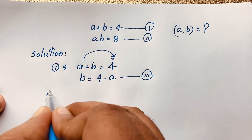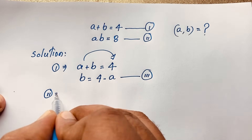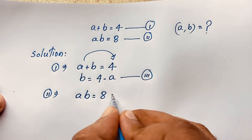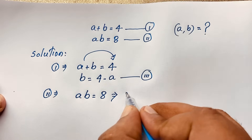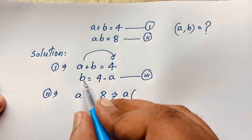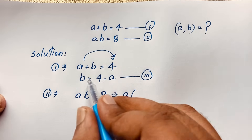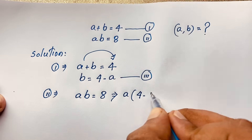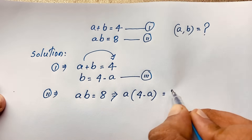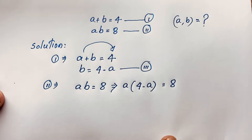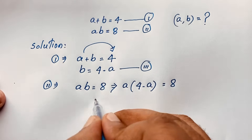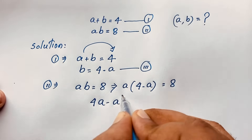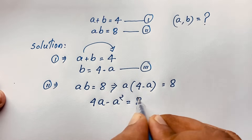Now I take our second equation which is ab is equal to 8. Then here a times b — I substitute b as 4 minus a — so a times (4 minus a) is equal to 8. It will be 4a minus a squared is equal to 8.